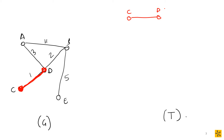Next we look at all the adjacent vertices to C and D and look at the edges between them, finding the one of minimum weight. C has no adjacent vertices or edges connected to it, so we move on to D. D has edges BD and AD. We look at these adjacent edges and find the minimum weight. Two is less than three, so we add that edge to our tree with weight two.